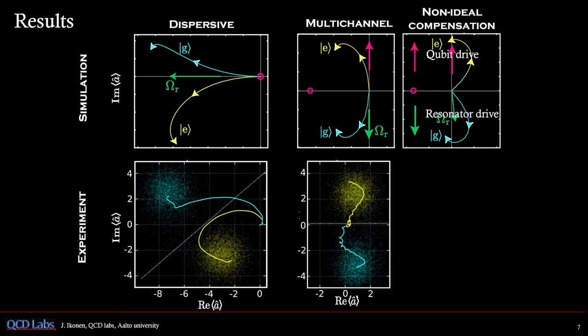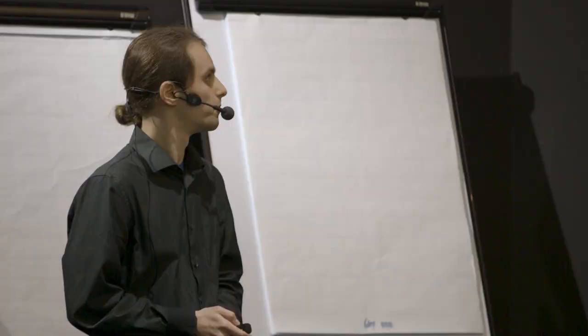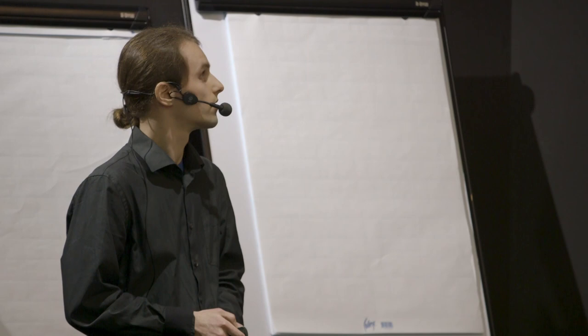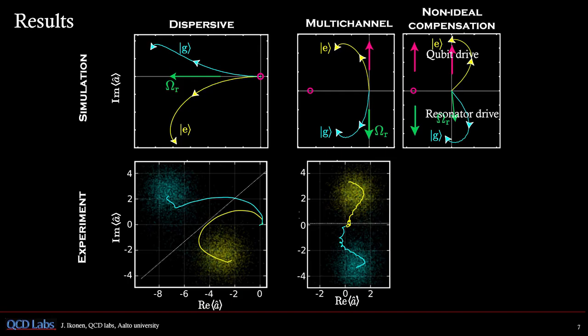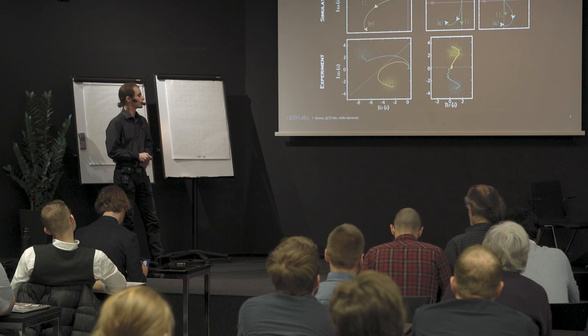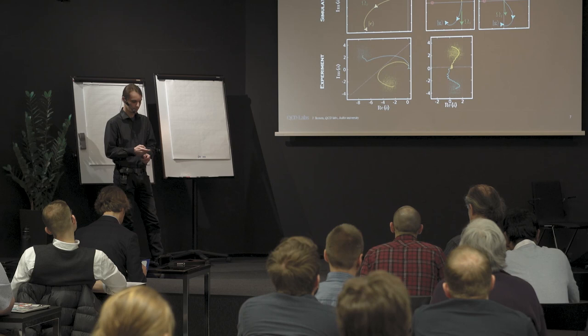Here are the experiments. We can see quite a nice qualitative agreement between simulation and experiment. This method is quite sensitive to the tones that we apply. In this simulation, one of the tones is slightly non-ideally aligned, and we can already see that the trajectories change significantly. So probably this experiment is somewhere between these two simulations.